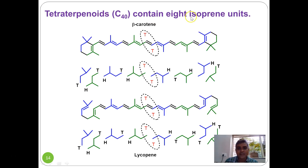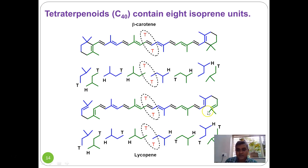Tetraterpenes contain eight isoprene units — examples are beta-carotene and lycopene. In beta-carotene, the large portion of the molecule shows head-to-tail coupling, but at the center portion an unbranched end connects to another unbranched end, giving a tail-to-tail coupling. Lycopene, present in tomatoes, similarly shows head-to-tail linkage throughout except at the center, where again there is a tail-to-tail linkage.